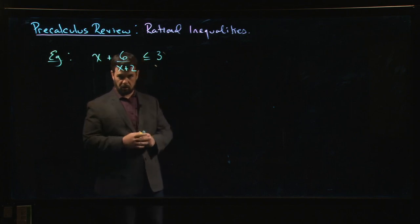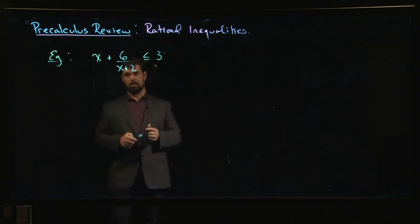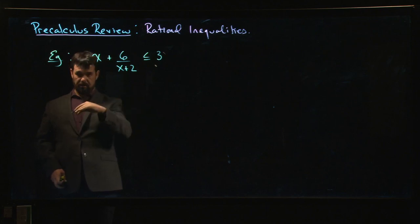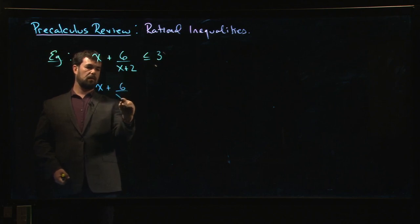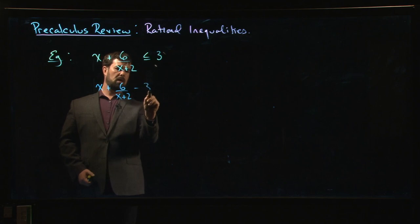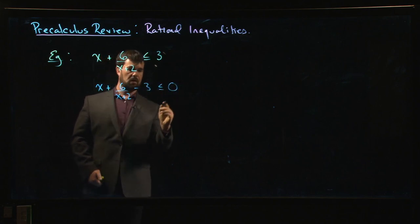So how do you proceed if you can't just cross multiply, get rid of the denominators, and turn it into a polynomial inequality? Well, the first step is the same as it was when we were doing polynomial inequalities, which is you get everything on one side. So we say, okay, so this is the same thing as saying x plus 6 over x plus 2 minus 3 less than or equal to zero.